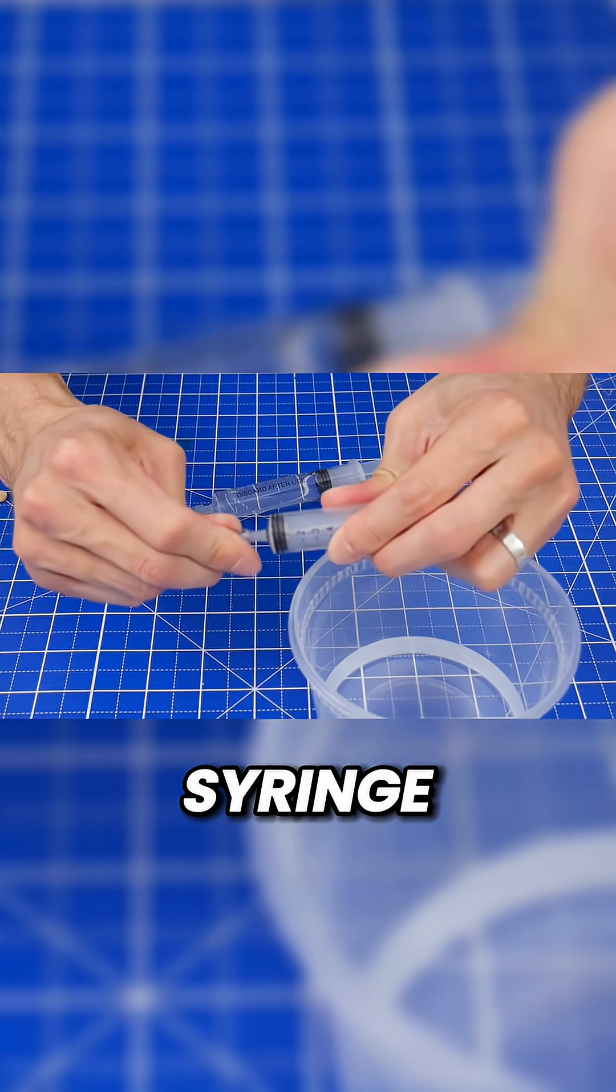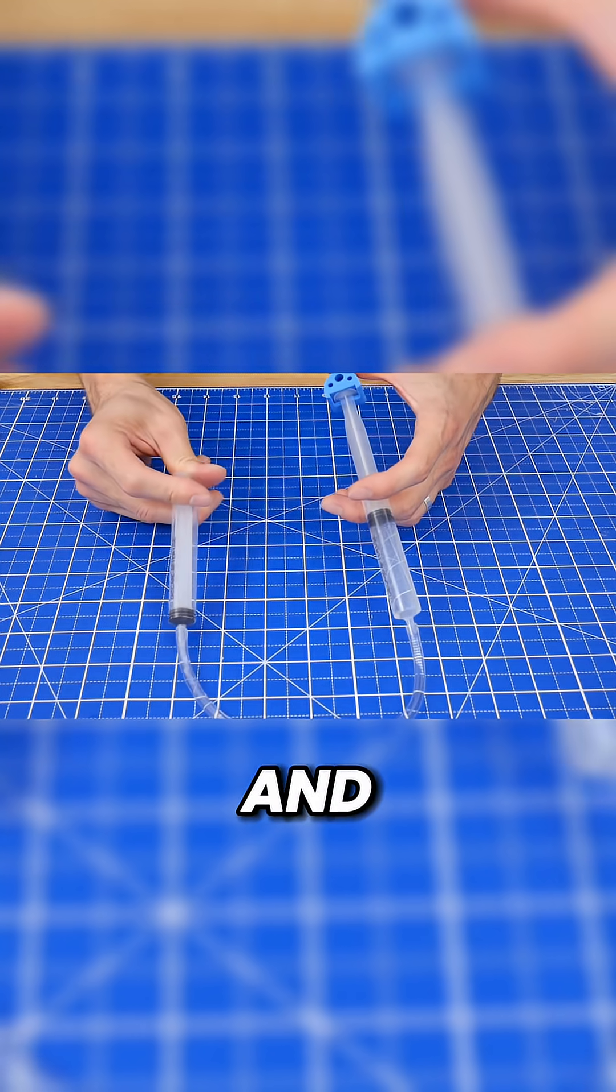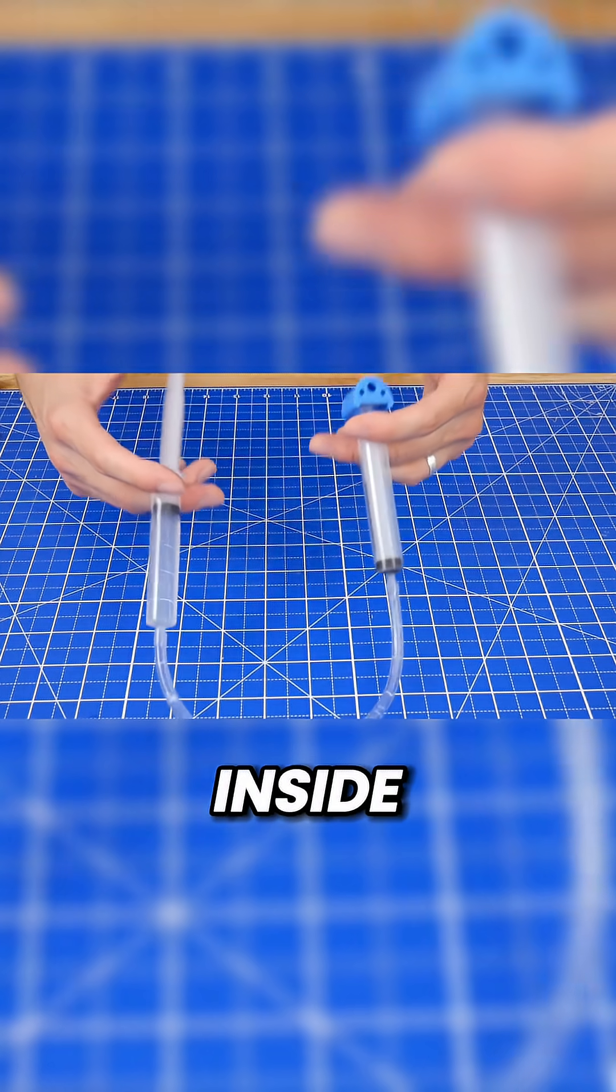Attach the other syringe and then snap on this plastic syringe adapter. Try it out and make sure there's little to no air inside the hydraulic system.